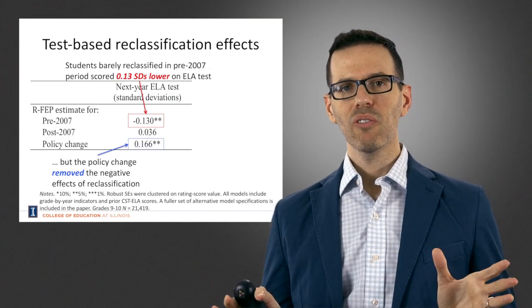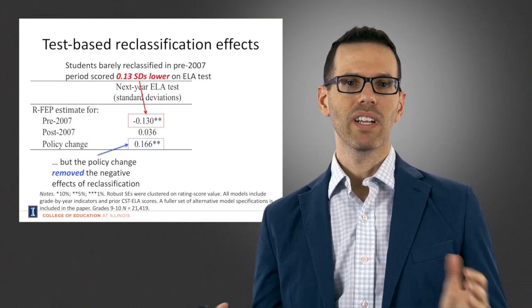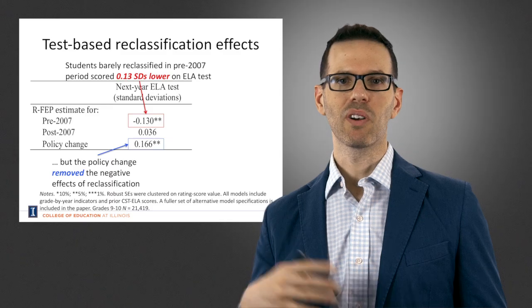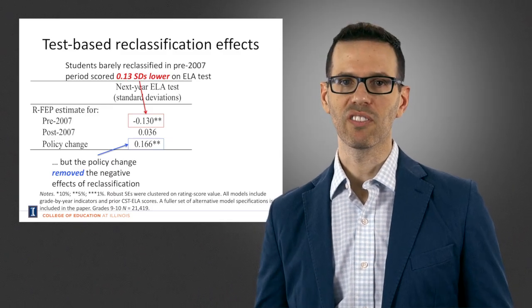Now we're going to put everything together. I've been showing you all the different components and now we're going to combine it where we have the instrumental variable component and then also the differencing off.